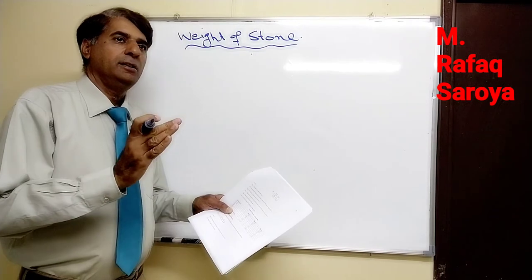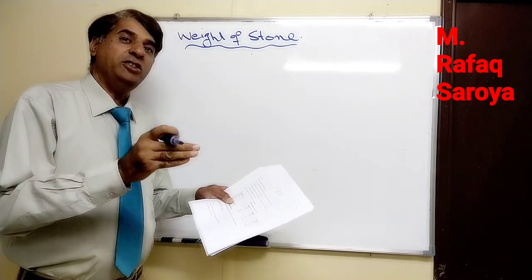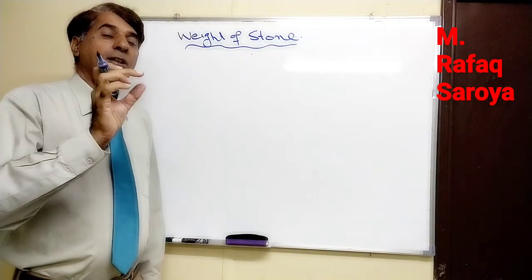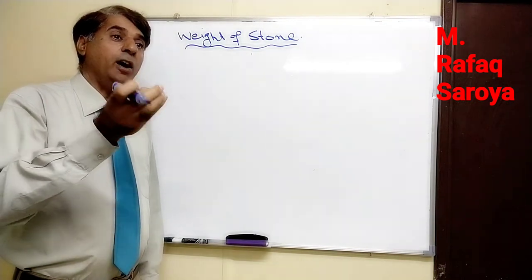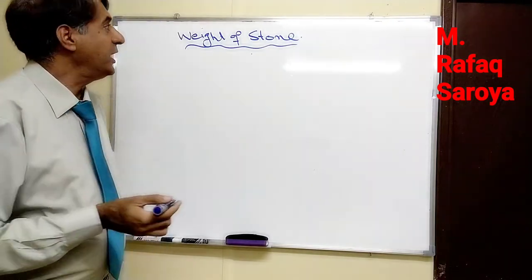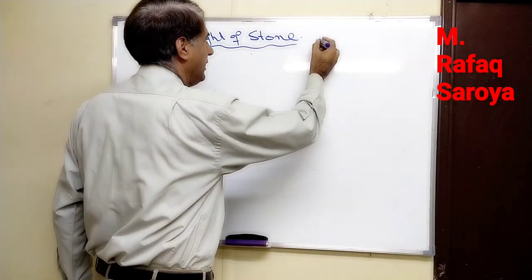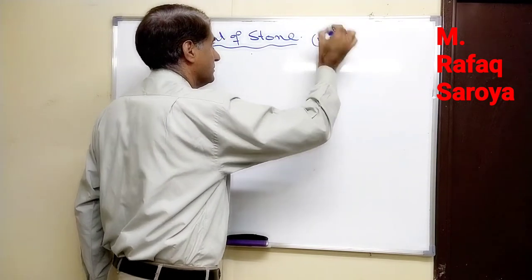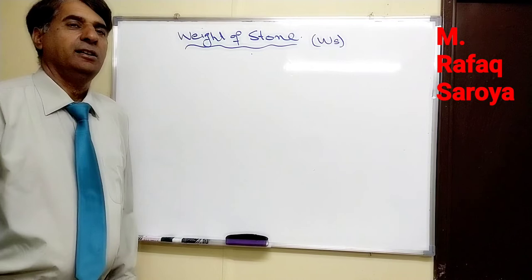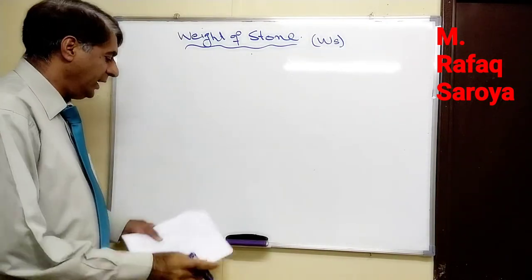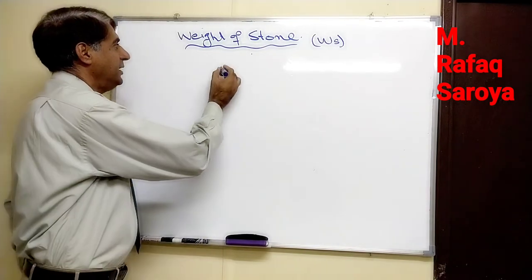Now after giving the computation of volumetric properties of the binder, we will come to know how much would be the aggregate. Now we will calculate the weight of stone, represented by Ws. It's very easy, there is no theoretical description, it is only direct mathematical computation.